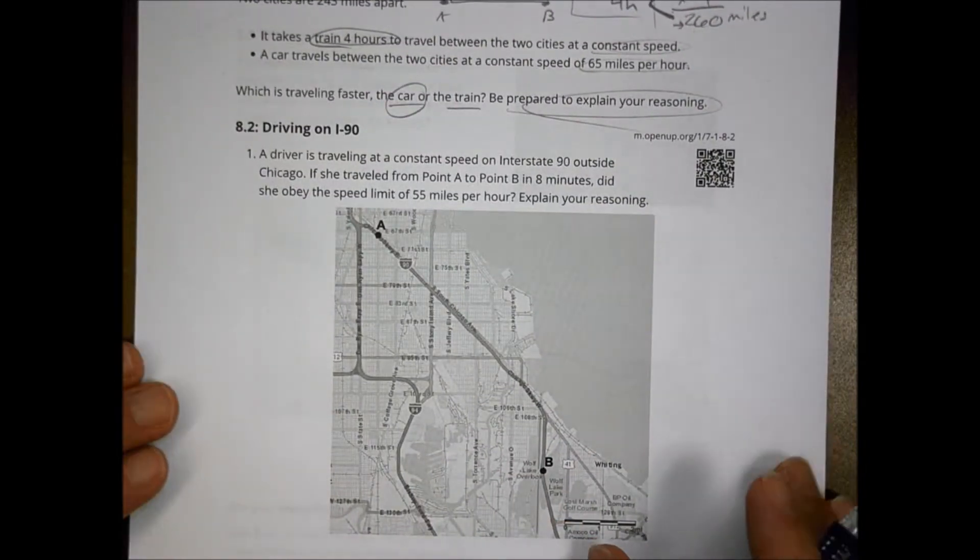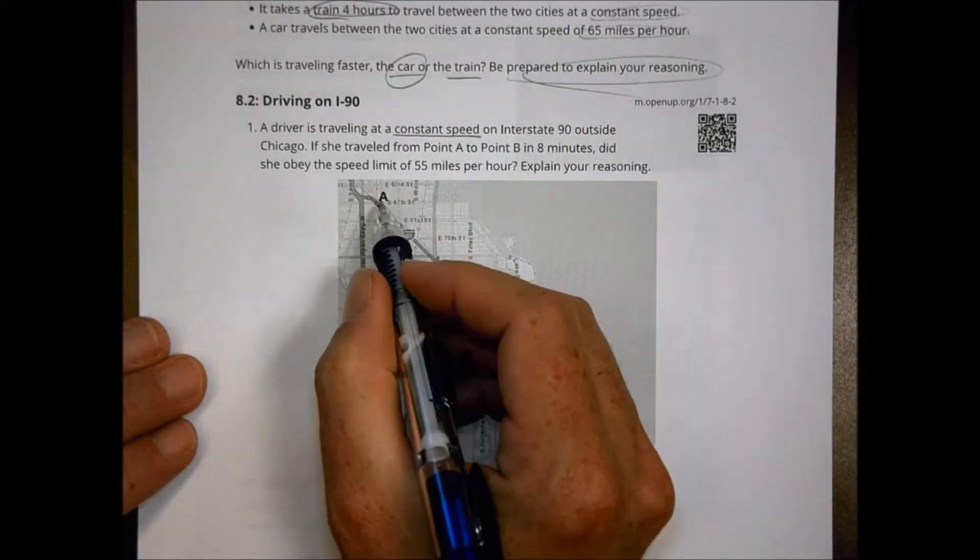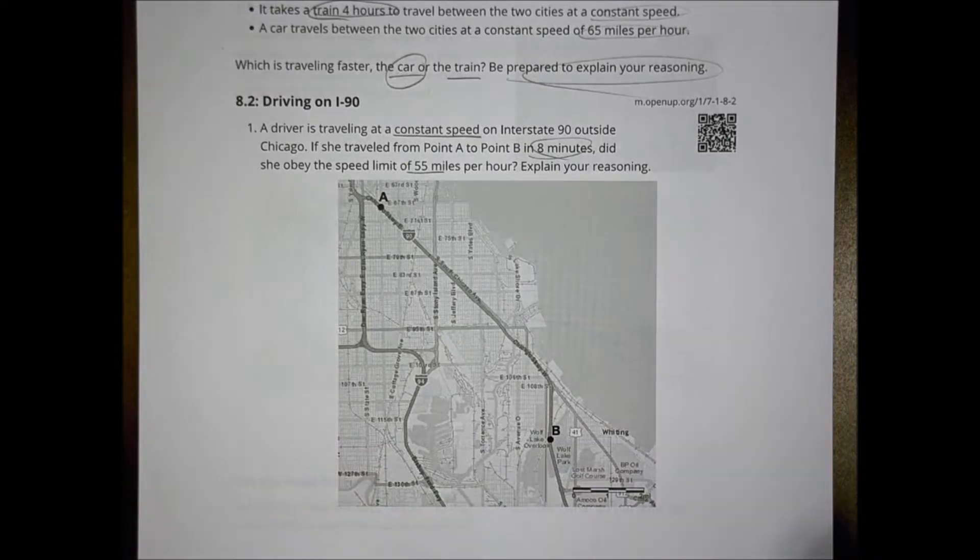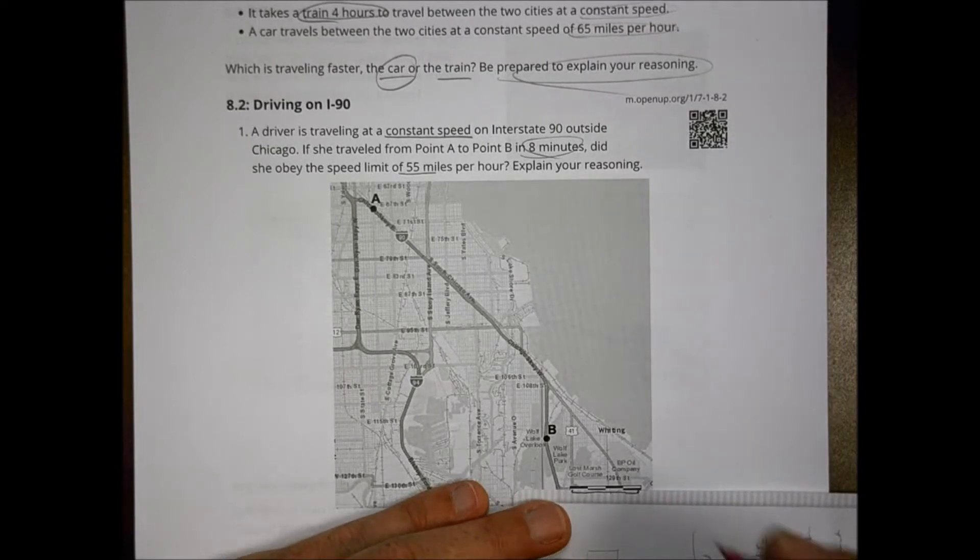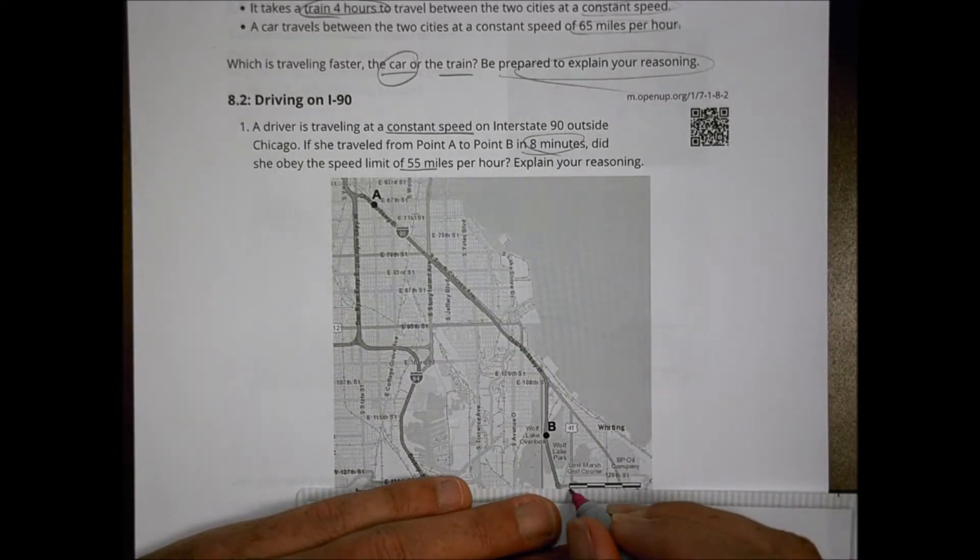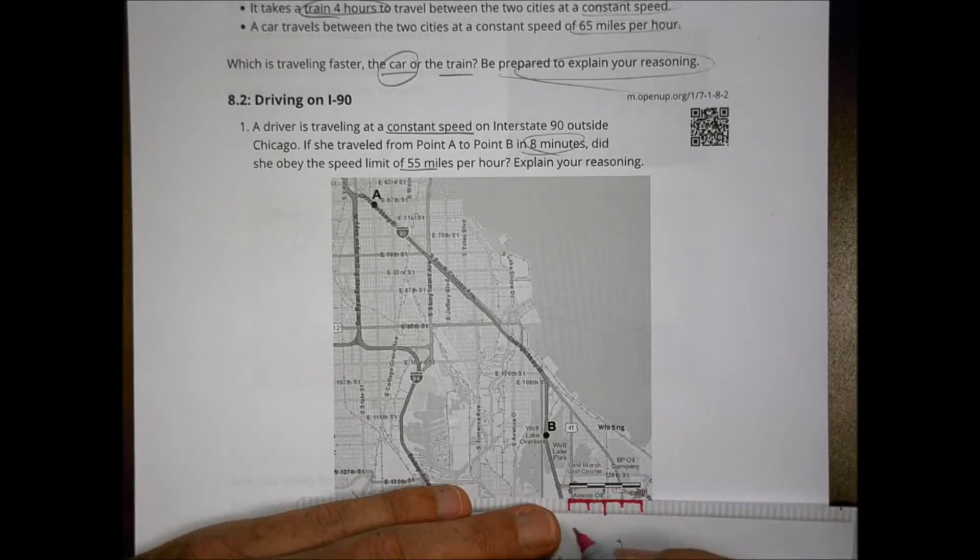The second example you looked at was this picture of a driver who was driving at a constant speed on an interstate outside of Chicago. And if she traveled from point A to point B in eight minutes, did she obey the 55 miles per hour speed limit? To do this, what we're looking at is we do have a scale factor or scale down on the bottom. So this little shape, I've got to redo this on my right shape here. If I kind of retrace that one there, that's how far my scale is.